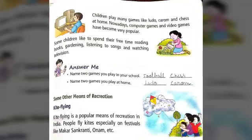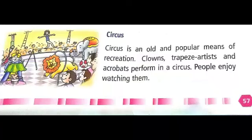Some other means of recreation — Manoranjan के और दूसरे तरीके. Kite flying — पतंग उड़ाना. Kite flying is a popular means of recreation in India. हमारे India में recreation का popular means है kite flying. People fly kites especially on festivals like Makar Sankranti, Onam, etc. People पतंग उड़ाते हैं especially festivals पर.